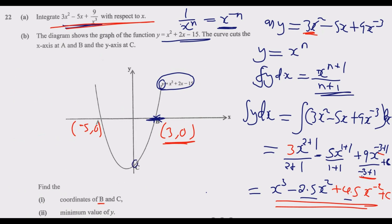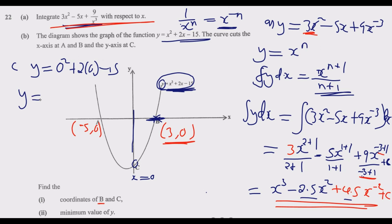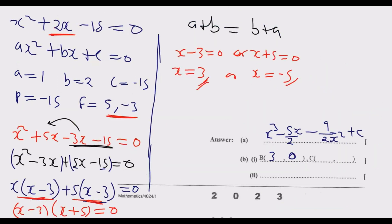To find point C on the y-axis, we set x = 0 in the function, since C lies along the vertical axis. Substituting x = 0: y = 0² + 2(0) − 15 = −15. So the coordinates of C are (0, −15). This is the y-intercept, which is the constant term in the quadratic — confirming C is at (0, −15).